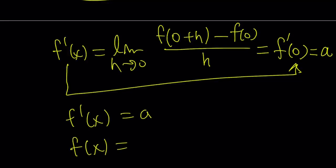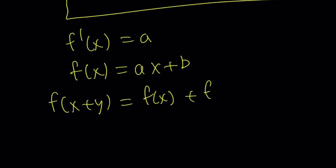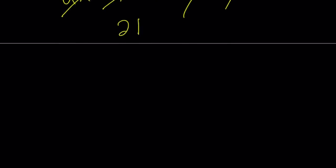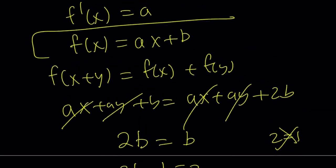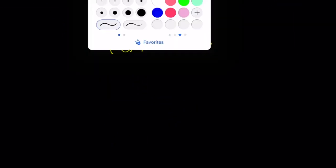So f'(x) = a. Integrating as before gives f(x) = ax + b. Plugging into f(x+y) = f(x) + f(y): the left side gives a(x+y) + b = ax + ay + b, and the right side gives (ax + b) + (ay + b) = ax + ay + 2b. So 2b = b, meaning b = 0. Therefore f(x) = ax. This brings us to the end of the video.